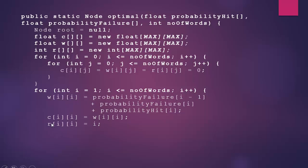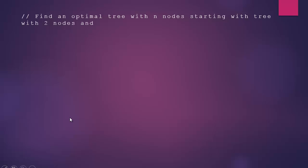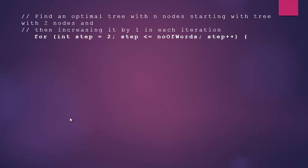Next, we find an optimal tree with n nodes, starting with two nodes and increasing by one each iteration. This is an outer for loop where step goes from 2 to numberOfWords (steps 2, 3, 4 — three loops). Inside, i goes from 1 to numberOfWords minus step plus one. When step is 2, i goes from 1 to 3; when step is 3, i goes from 1 to 2.